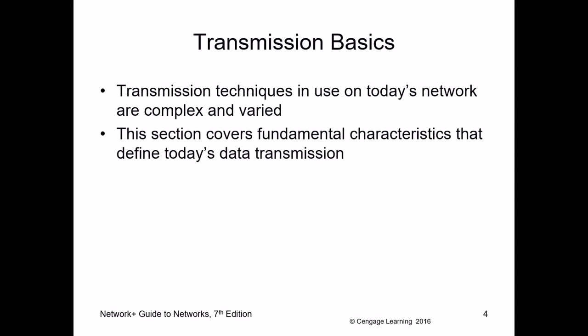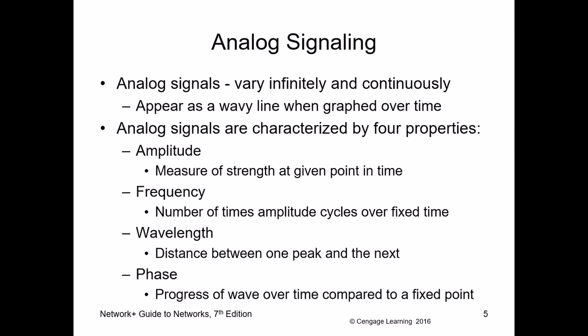Let's talk about some transmission basics. An analog signal is a continuous signal — that's the buzzword for it. It's a continuous wave where the transmitter transmits an infinite amount of voltages over a period of time. Please write down the terms amplitude, frequency, wavelength, and phase, as we'll discuss those now.